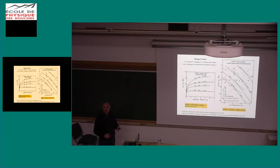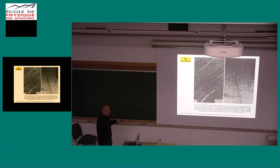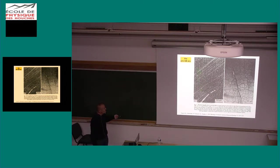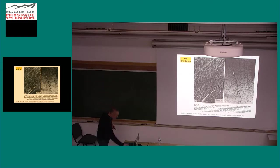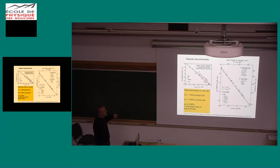For geologists: if you make a thin section of rock salt, you don't see anything because it's isotropic — cross your polarizers and it's black. What they did was break the samples, take small crystals out, etch them, and demonstrate that there were lots of dislocations, subgrain walls, and beautiful networks. This was important because they basically laid the basis of subgrain size piezometry, showing a very nice relationship between differential stress and subgrain size.